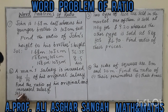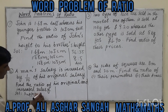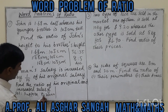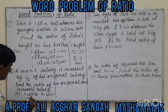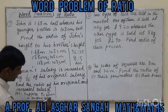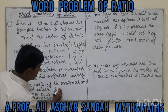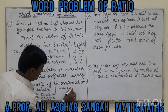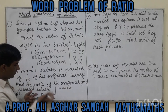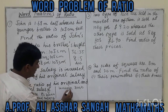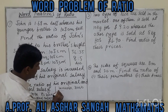Solution: Suppose the original salary is 30,000. The increase is one tenth of 30,000, which is 3,000. So the new increased salary is 30,000 plus 3,000 equals 33,000.